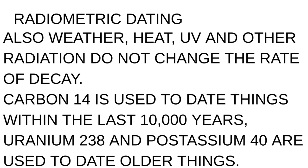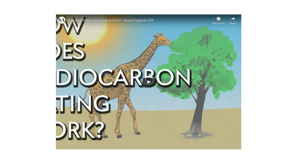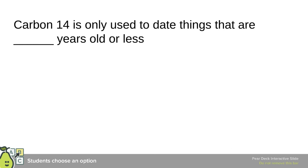Carbon-14 is really only good for certain time periods because its half-life is about 5,730 years. You can't use it for things that are really old because the amount remaining would be too small to measure. The half-life is the time it takes for half of the sample to change into the non-radioactive isotope. Weather, heat, UV, and radiation don't change the rate of decay — it's constant. Carbon-14 can be used to date things about 10,000 years old. Uranium-238 and potassium-40 are used to date older things, like rocks, and that's how we got an idea of how old the Earth is.